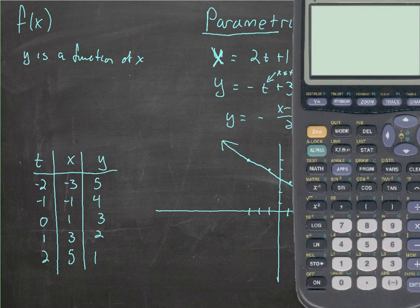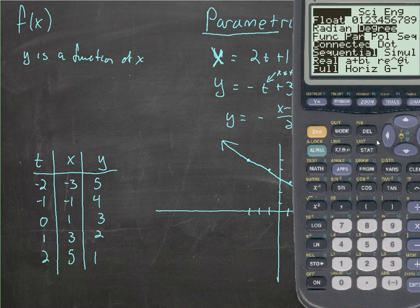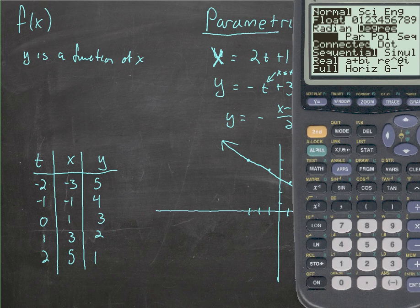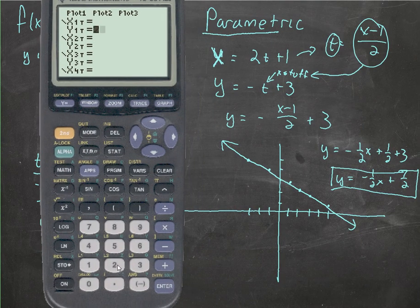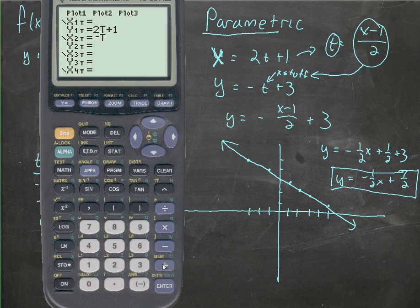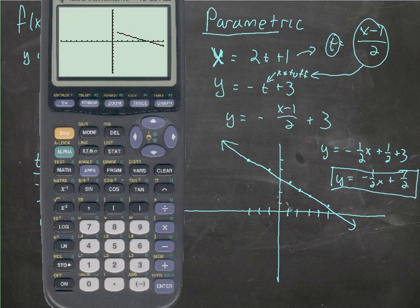We can use our calculator to graph parametric functions. We can go into mode. And normally, your calculator is set to function, right? Normal function. Now we're going to go to parametric function. Parametric gives us these two spaces for each function. The first one will be 2t plus 1 for x, and negative t plus 3 for y. So, I will take this and put 2t plus 1, and then the y is negative t plus 3. And then if we look at the graph, we can see the graph is just what we have here.